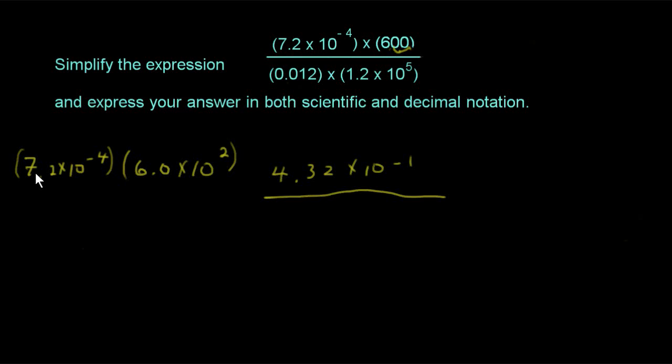And let's see, the 6 times the 7.2, I believe I get 43.2 for that. And then when we multiply our decimals, our two decimal numbers, or not decimals, our two exponent numbers, 10 to the negative 4 times 10 to the second, we need to just add the exponents together. So what's negative 4 plus 2? That's negative 2. So we get 43.2 times 10 to the negative 2.